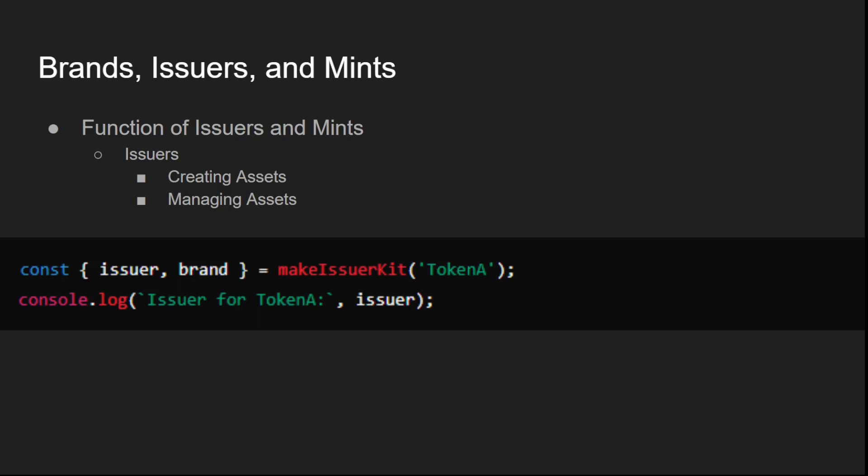An issuer is responsible for creating new instances of an asset and validating those assets during transactions. It ensures that assets adhere to the rules defined by the contract. Issuers also provide methods for issuing, transferring, and redeeming assets, ensuring that asset movements are secure and comply with the contract's rules.